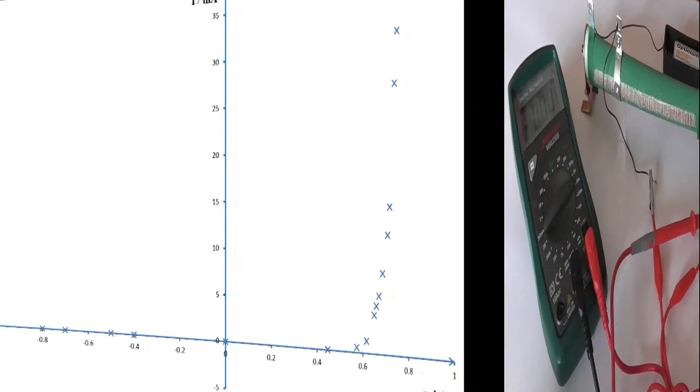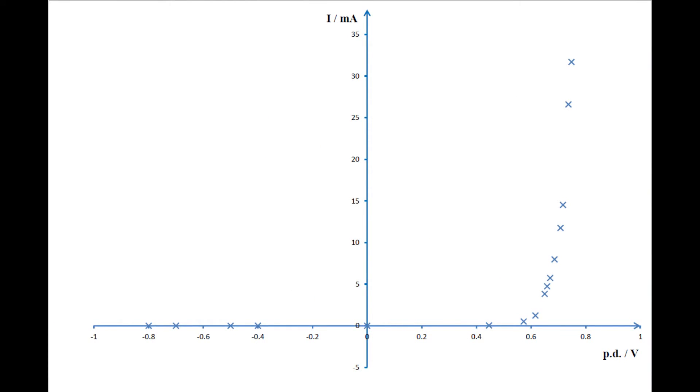So what does this look like on a graph? Well, you can see that there's no current at all for the negative voltages.